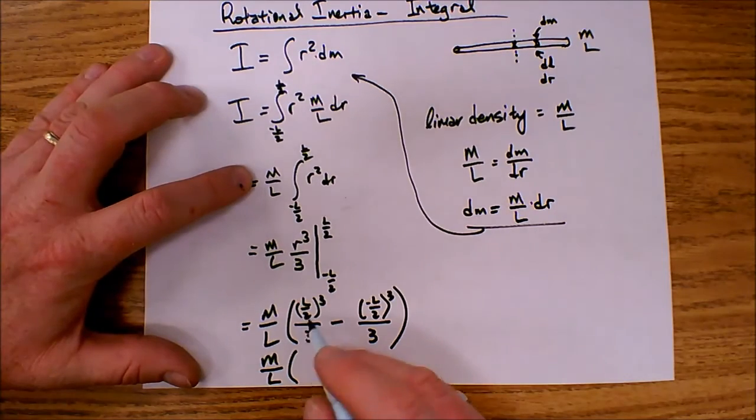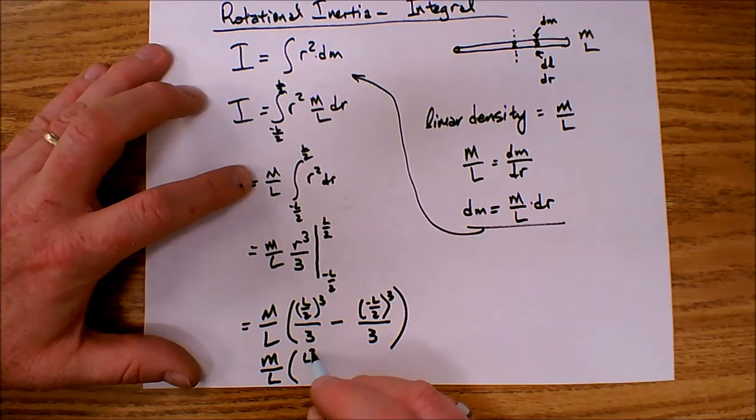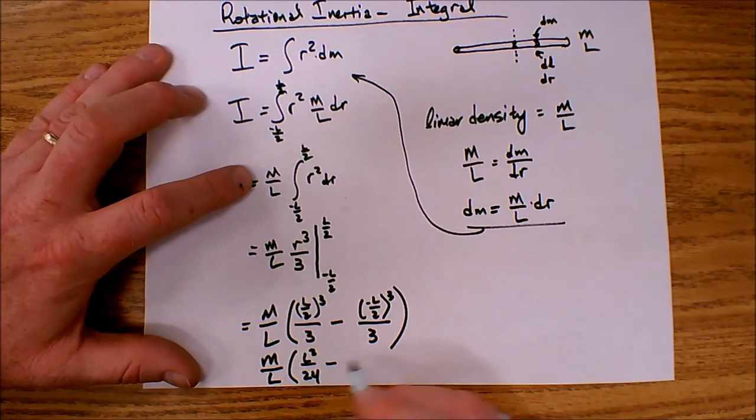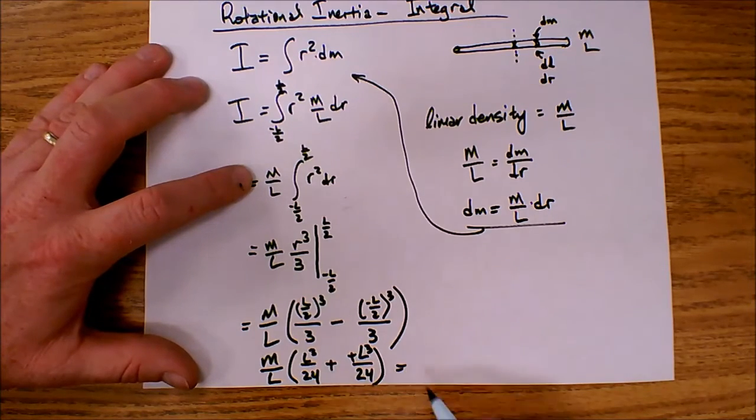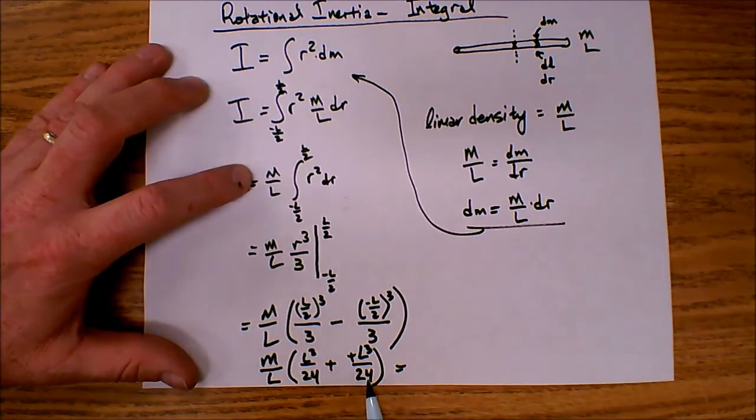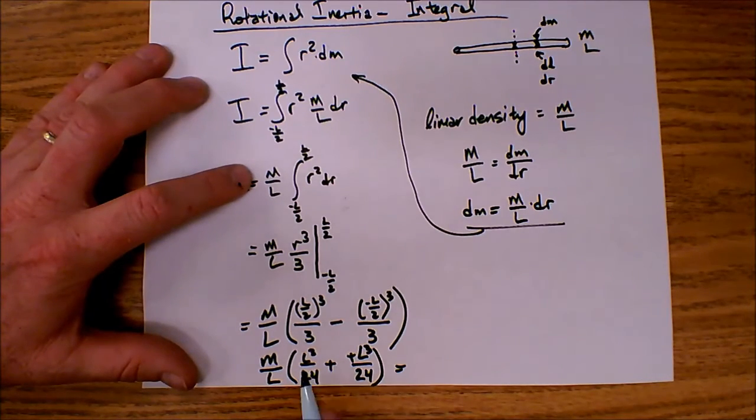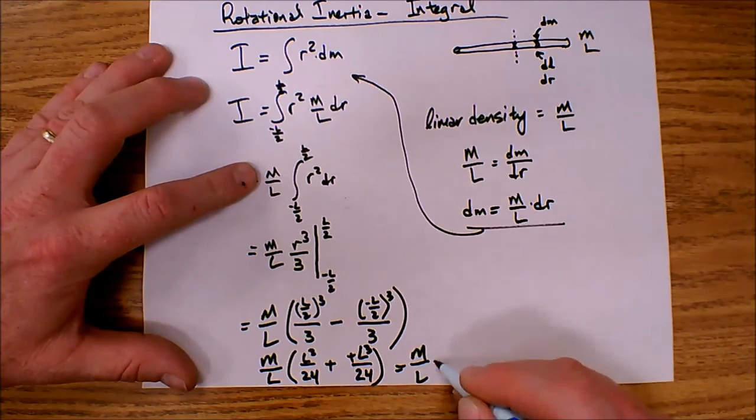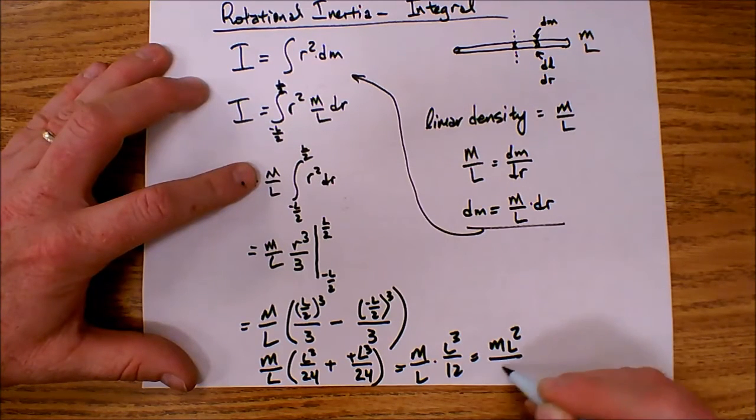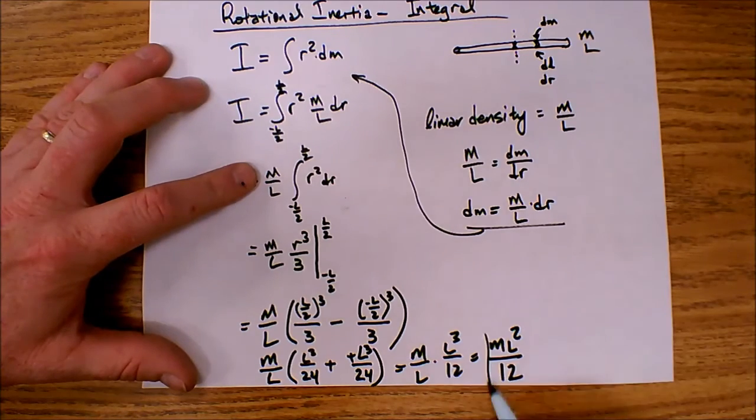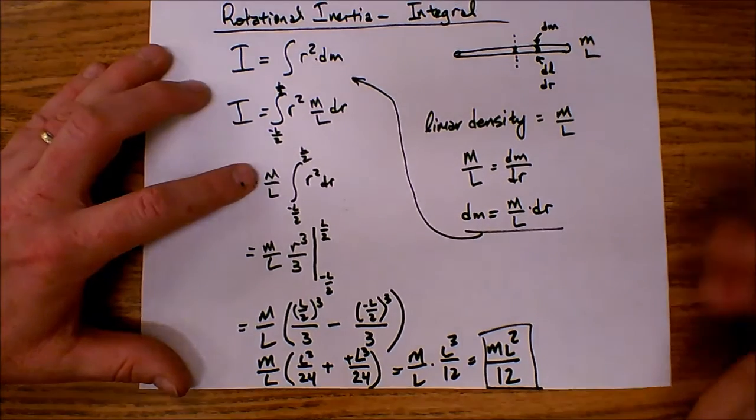So this becomes m over l times what I'm left with here is l cubed over 24 minus, and again here I have a negative l cubed over 24. Minus a negative becomes plus a positive, and that becomes l cubed over 24 plus l cubed over 24, which is 2l cubed over 24 or l cubed over 12. So I have m over l times l cubed over 12, which is ml squared over 12. That is the inertia of a uniform thin rod with an axis passing through the middle.